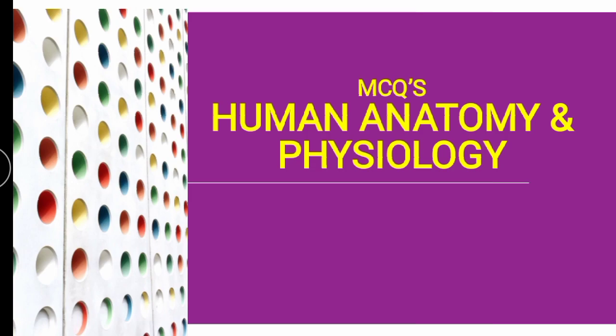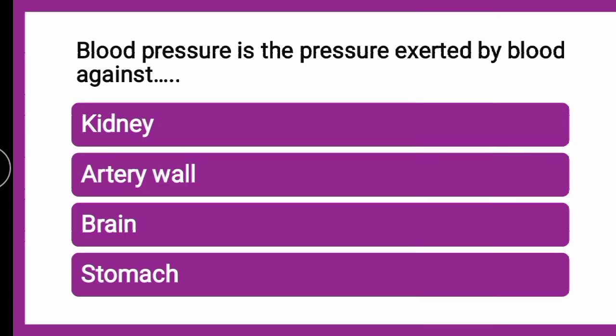The first MCQ is: blood pressure is the pressure which is exerted by blood against dash. Whether the blood pressure is the pressure exerted by the blood against the kidney, whether it is against the artery walls, whether it is against the brain, or against the stomach. Put your answers in the comment section fast.